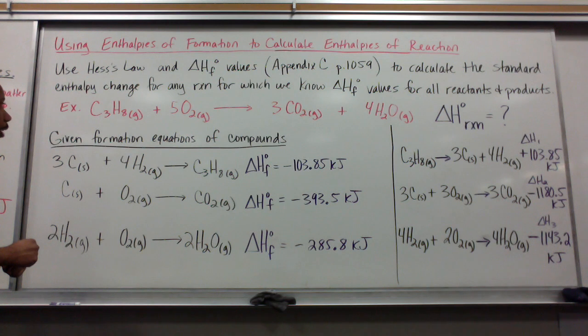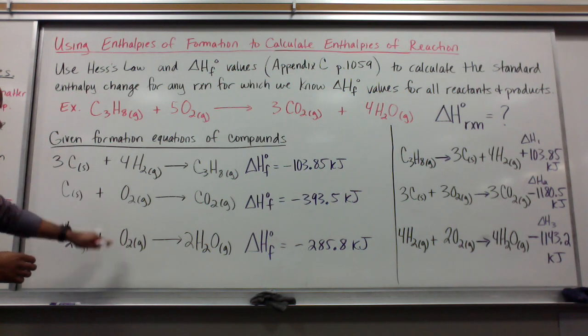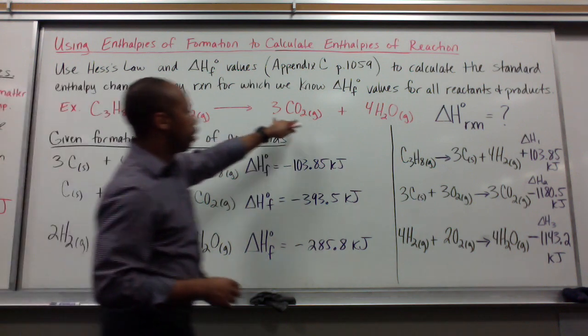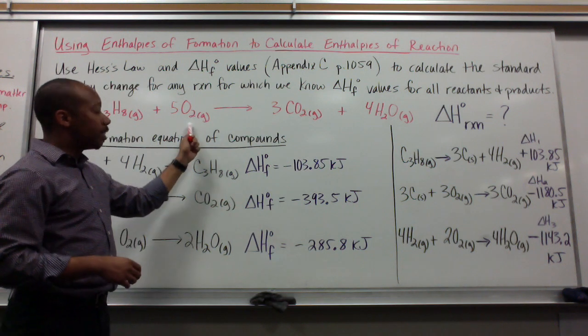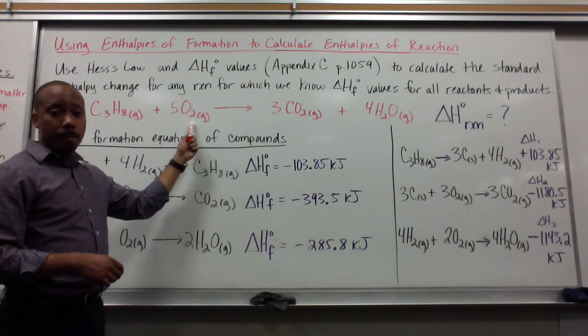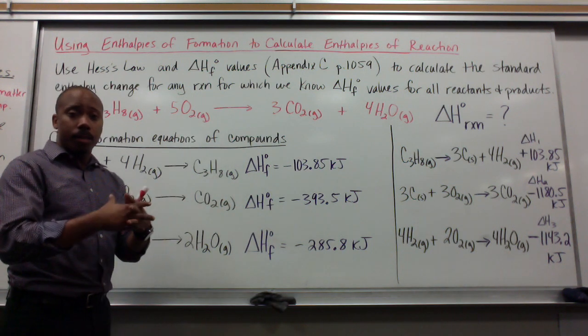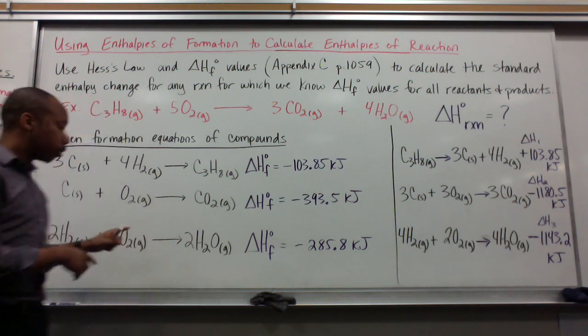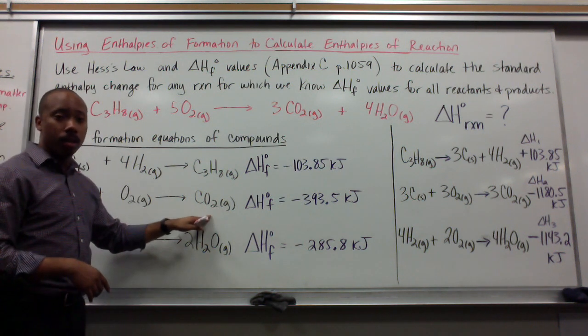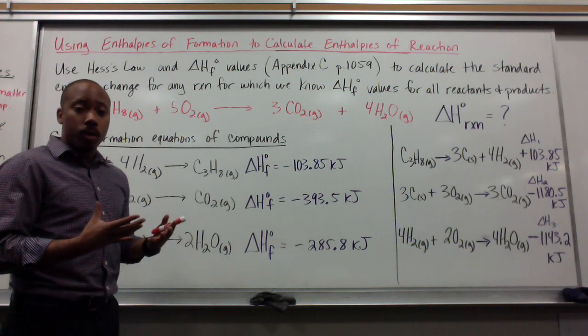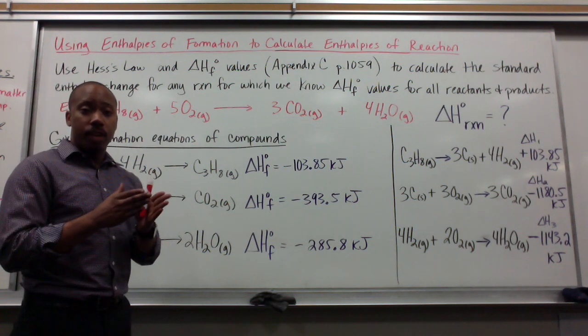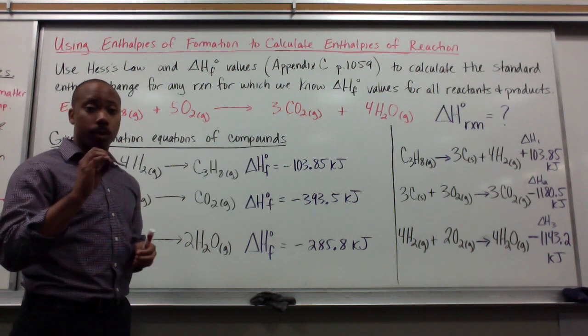So first and foremost, I can think of, well, I see three equations, but I see four different substances here. O₂ is not a compound. Thus, it is not formed. O₂ can be used to form something else that is a compound, but itself is not being formed. So its enthalpy change of formation is zero kilojoules. So we don't have to factor it in to the overall delta H of reaction.